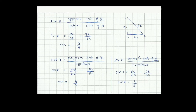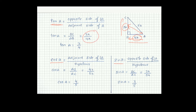Now we have to find the trigonometric ratios: tan A, cos A, and sin A. First, tan A equals opposite side of angle A divided by adjacent side of angle A. Opposite side BC is 3k and adjacent side AB is 4k. So tan A equals 3k divided by 4k. The k cancels, therefore tan A equals 3 by 4.